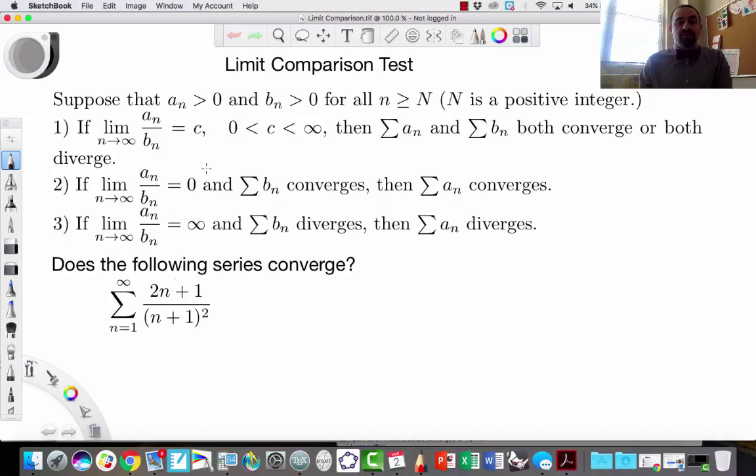But if the limit is going to zero, that means that b sub n is going faster than a sub n. And if the limit is infinity, that means a sub n is going faster than b sub n. Meaning that in the limiting sense, one is bigger than the other. So if as number two, the bottom is bigger than the top, and the bottom converges, well, then the top converges too. If the bottom is smaller than the top, and the bottom diverges, then the top diverges too.